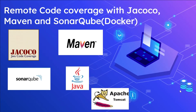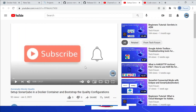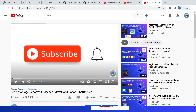Hi all, welcome to Tech Forum. In this video, let us see how to generate remote code coverage with JaCoCo Maven plugin and SonarQube server. In our earlier videos we have seen how to quickly set up the SonarQube server with bootstrapped configurations, and how to generate the code coverage report locally with JaCoCo Maven plugin. The first reference video is 'Set up SonarQube in a Docker container and bootstrap the quality configuration,' and another is 'Code coverage report with JaCoCo Maven plugin and SonarQube in Docker.'